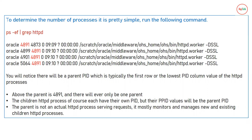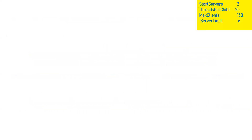In the output, the first process — for example with PID 4891 — is the main child process. Inside that child process you have other threads with PIDs like 4899, 4901, 5064, each having a parent PID of 4891. The main httpd process (lowest PID) is the parent; all child threads share its PID as their PPID. The main parent process does not serve any requests — it only monitors the child threads.